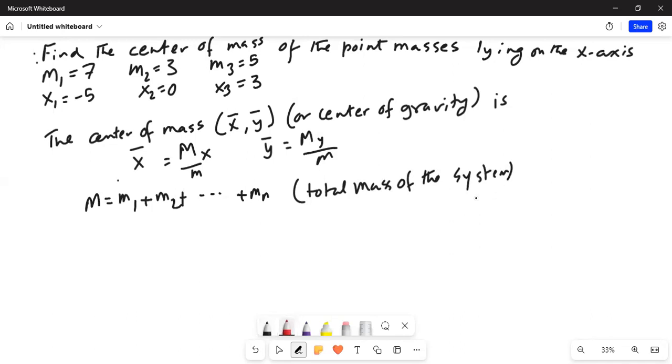I'll change the color of the pen and do this problem. Since the points and the masses are on x-axis, therefore use x-bar is equal to mx by m.